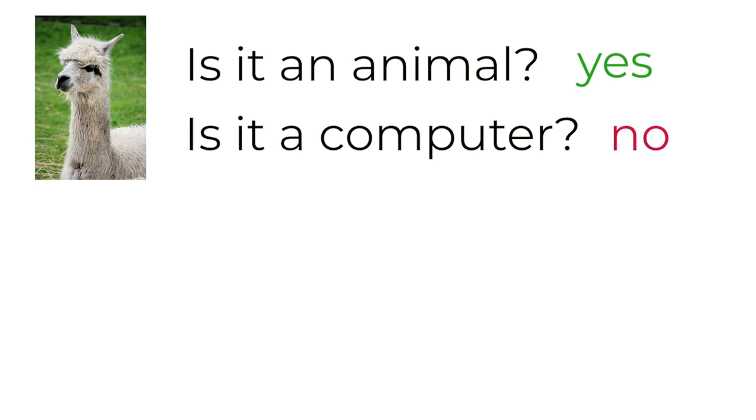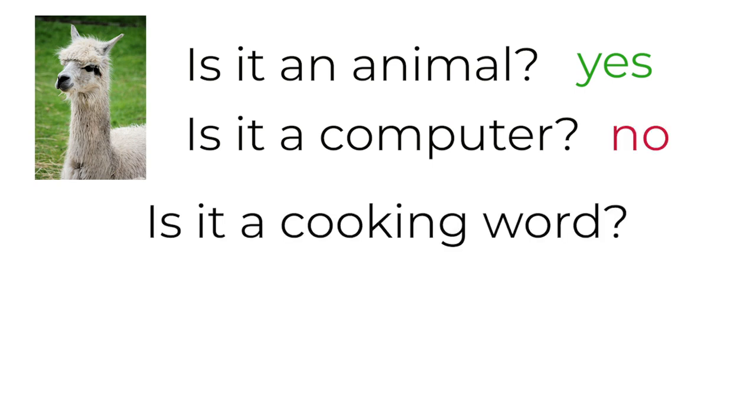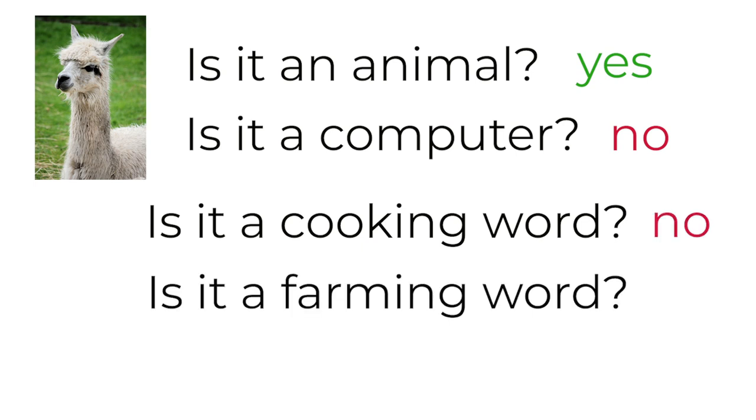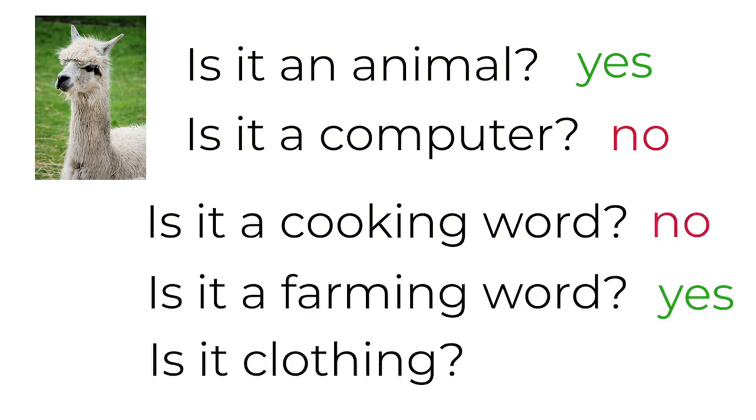You've probably done this with a game called 20 questions, but a computer asks about 300 questions, and we can sort words like 'llama' into categories. We can say: is it an animal? Yes. Is it a computer? No. Is it a cooking word? No. How about farming? Yes. How about clothing? Also yes. So as we choose those yes and no values, we can say that words are more or less closely related to one another and give them a mathematical value.